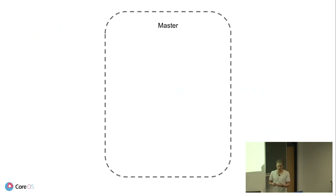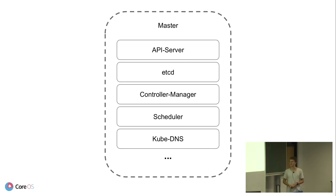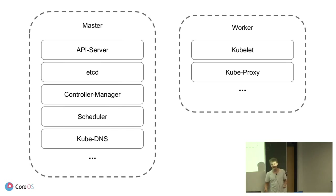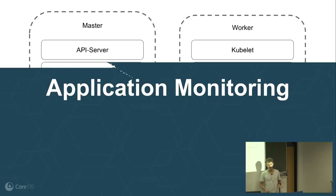How would Kubernetes look like? You have a master node with a bunch of components — and surprise, they all expose metrics. They all expose the /metrics endpoint, which is really nice. You just point Prometheus at it and that's it. You also have worker nodes and again all the Kubernetes components expose metrics by default, so you're good to go. That covers cluster monitoring.